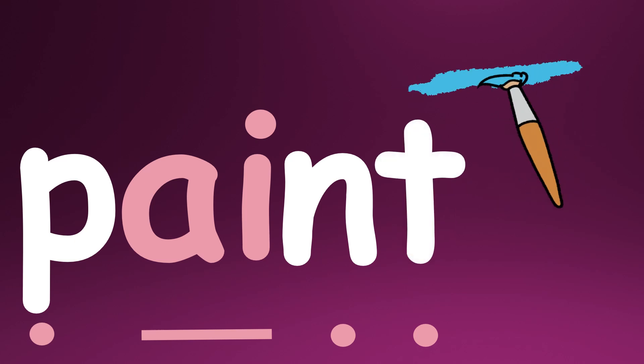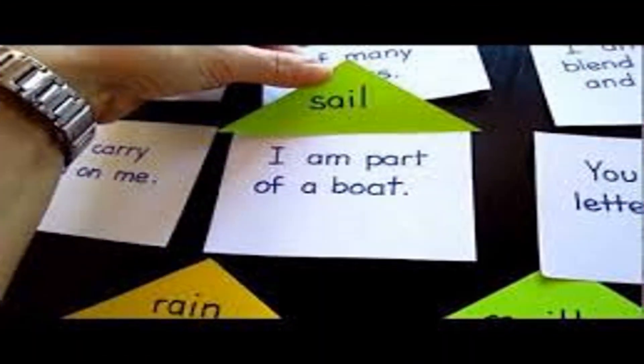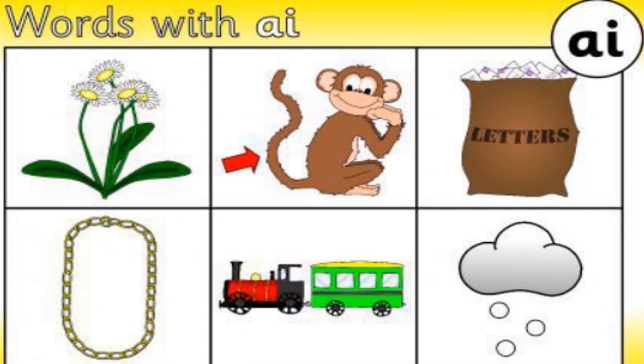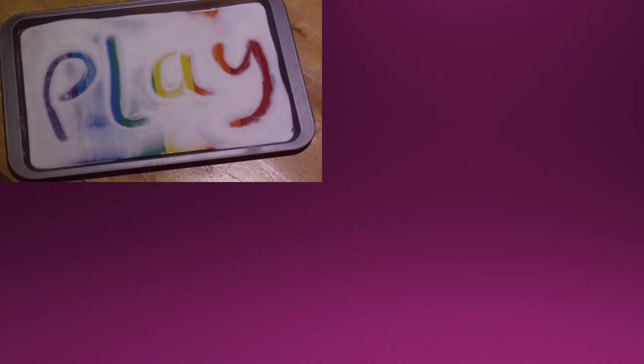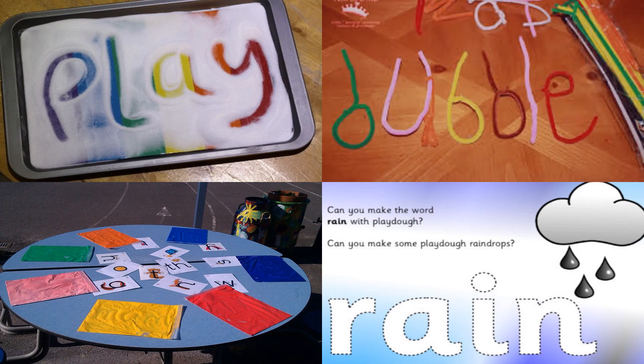Now let's talk about some activities you can use to practice the 'ai' sound. You can use riddles where students have to match the correct words to each riddle — students will genuinely enjoy moving and matching, and they will compete against each other for the correct answer. You can also use bingo games where students read the words first and then match them to the correct picture. For students who are struggling, you can use scissors, play-doh, paint, or pipe cleaners to practice forming the sound or writing the words.